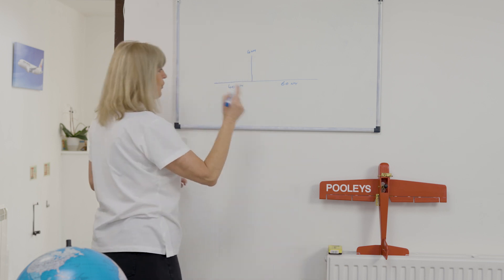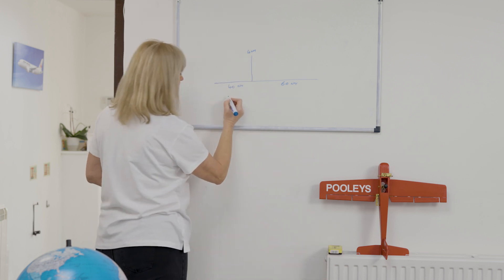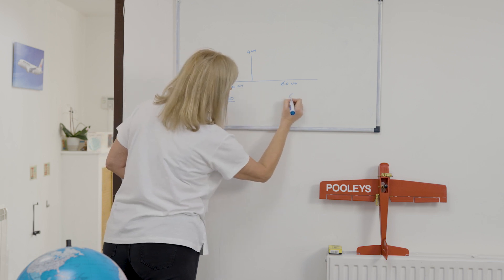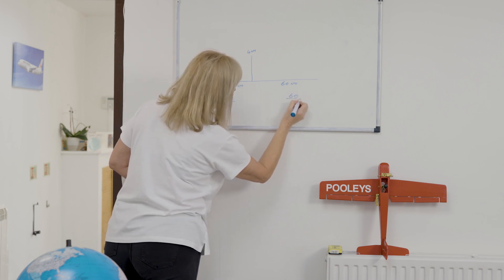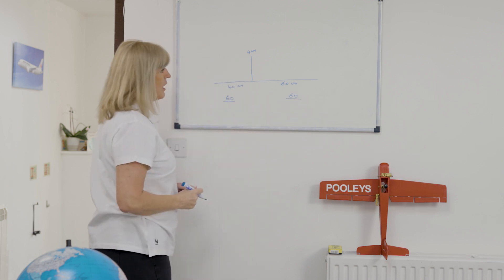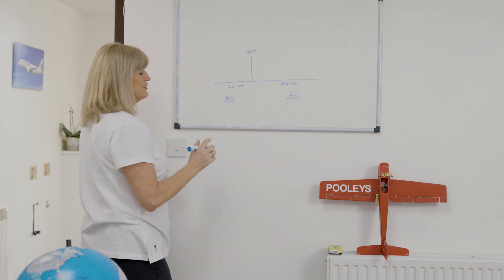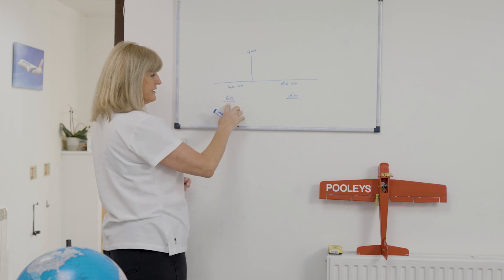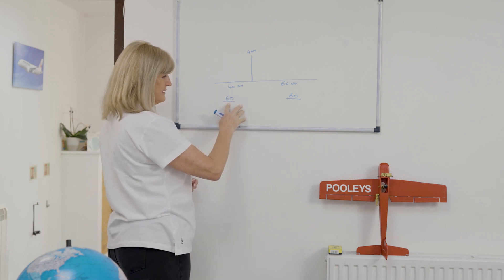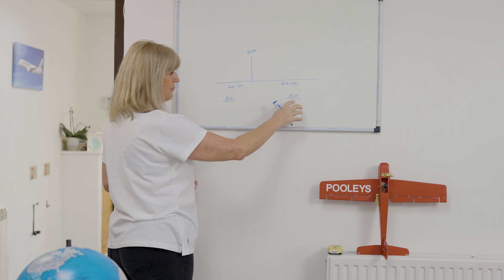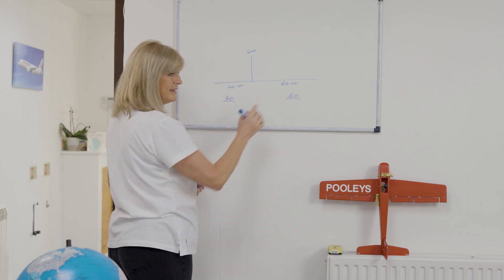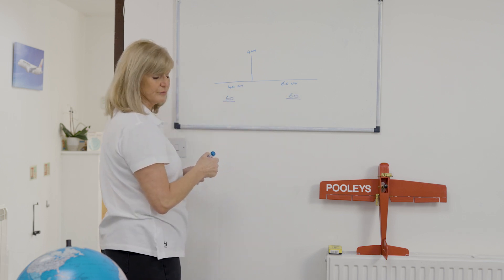It's called the 1 in 60 rule because 60 minutes equals 1 degree. So what you do is draw the picture, put a 60 on this side and underline it, and put a 60 on this side and underline it. It doesn't matter what these are — it is the 1 in 60 rule.